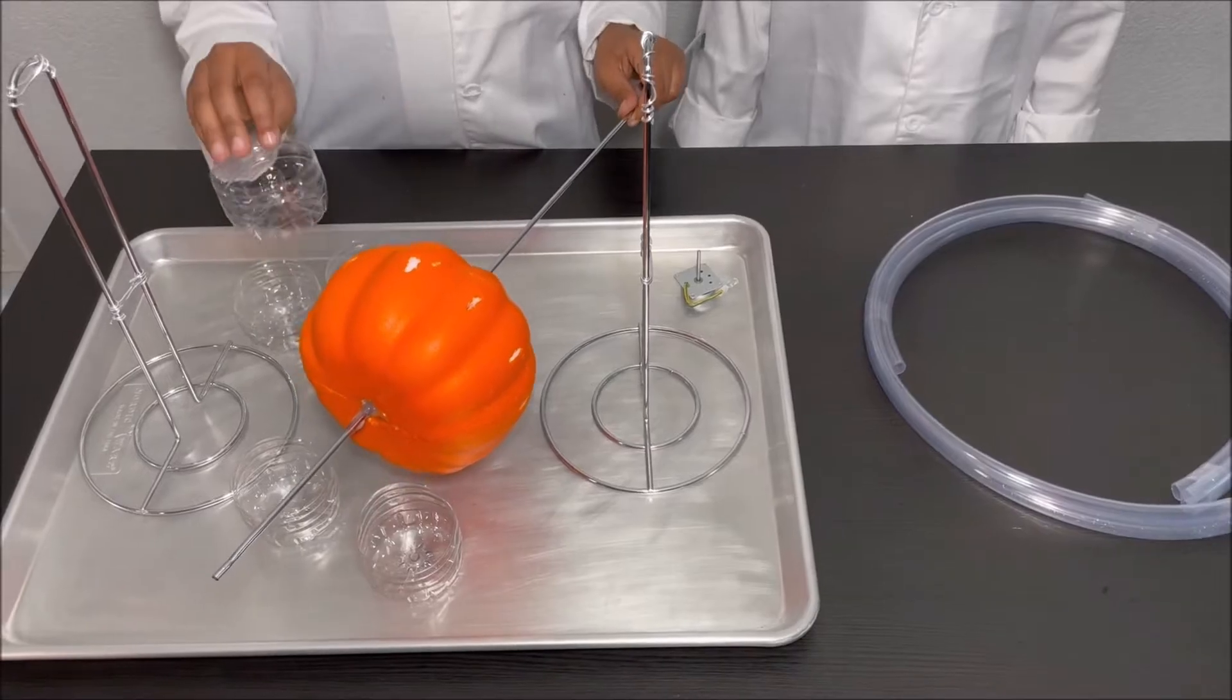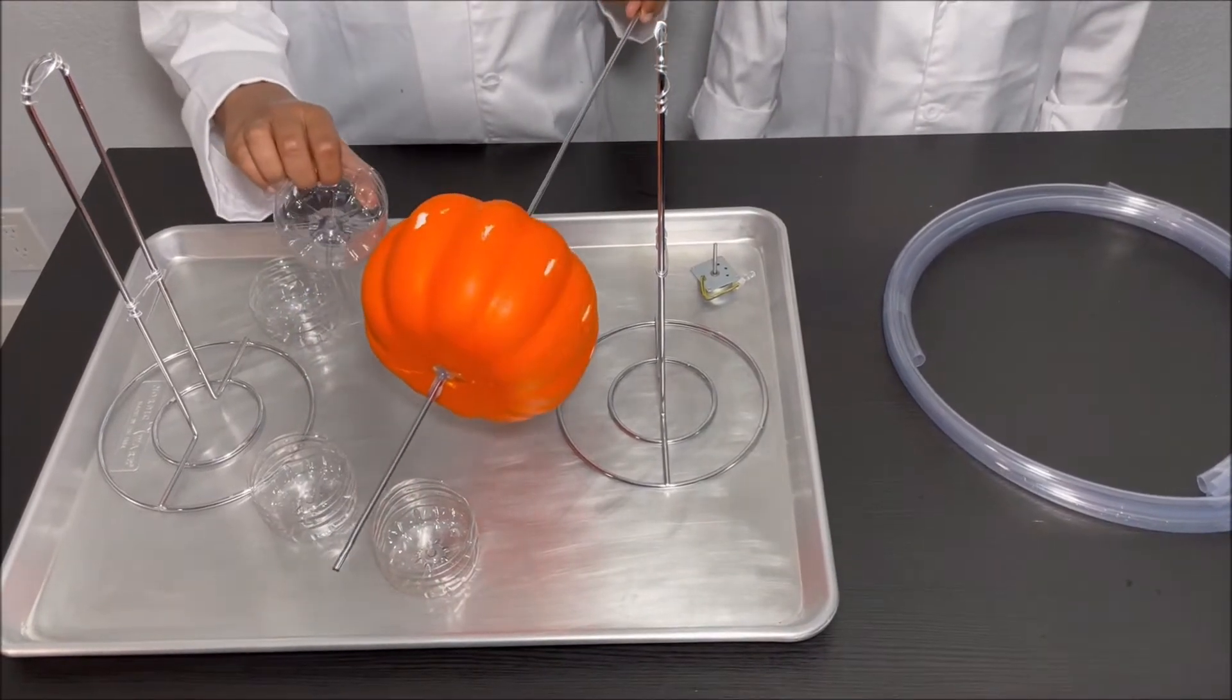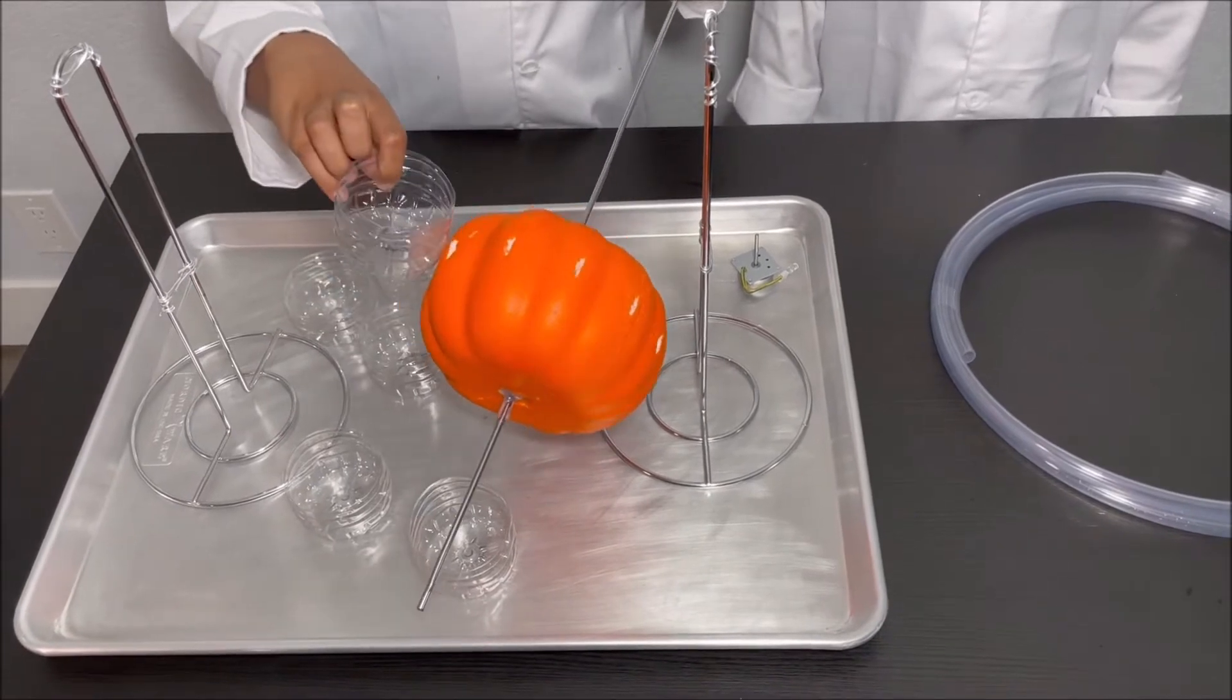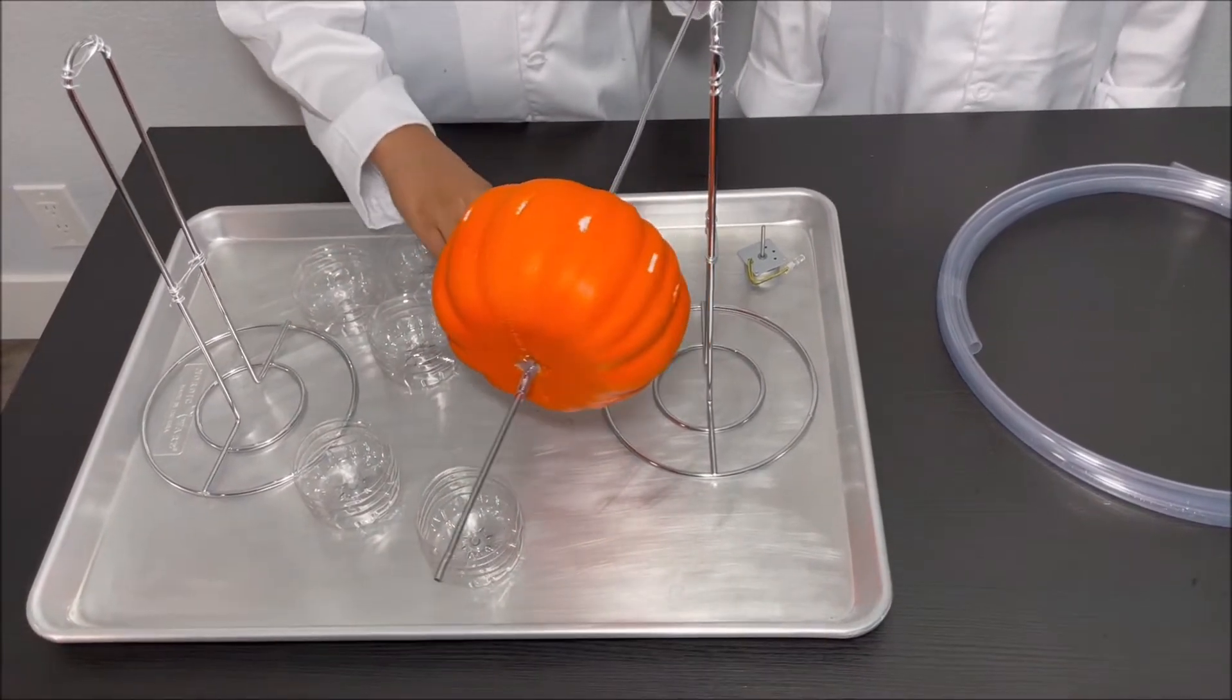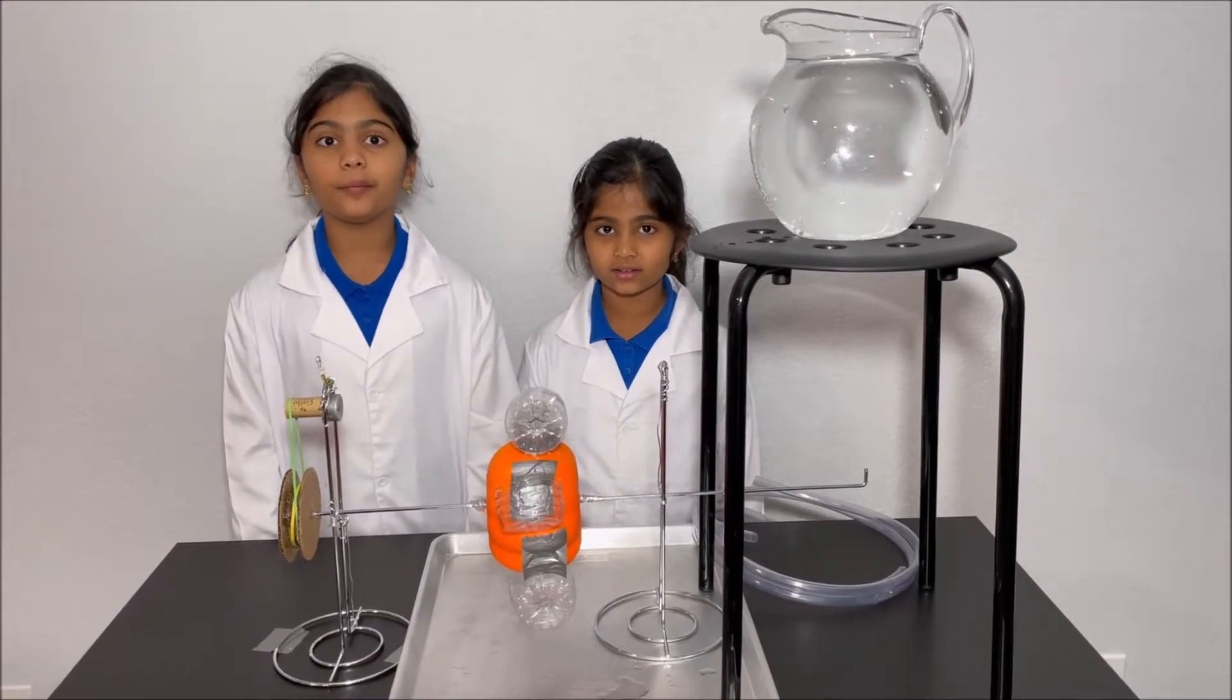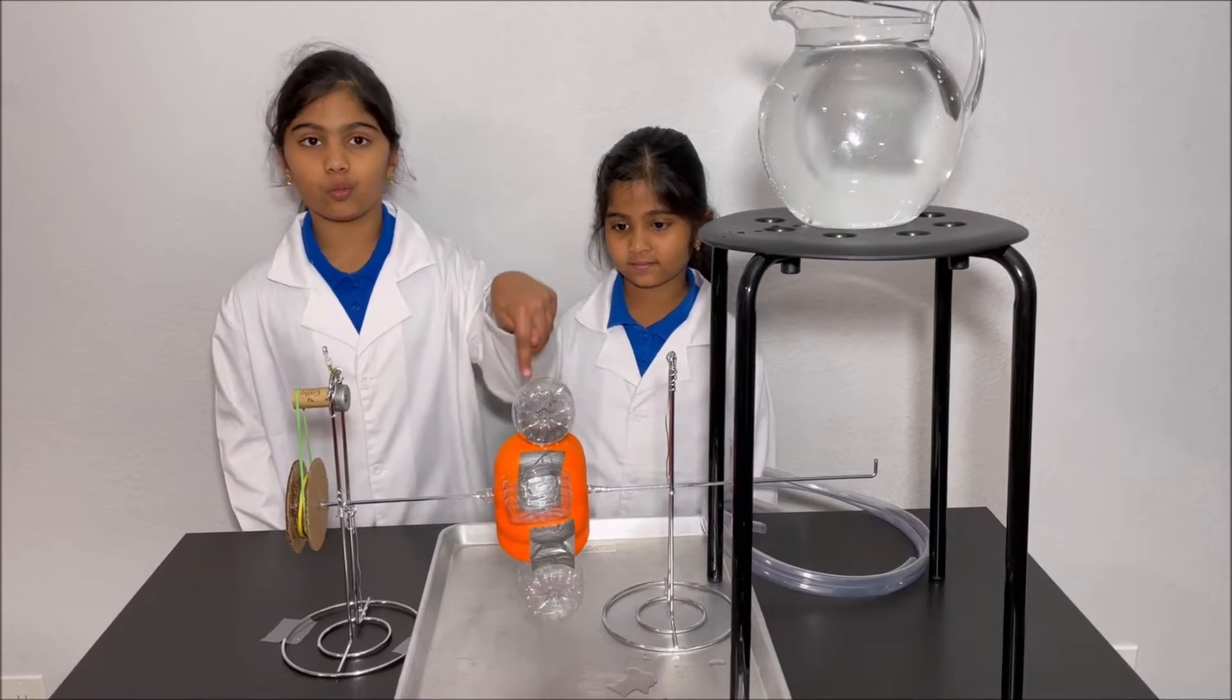We're going to make the water wheel by attaching these buckets to the water wheel like this, and then we attach the other buckets. We made an electricity generator using a water wheel.